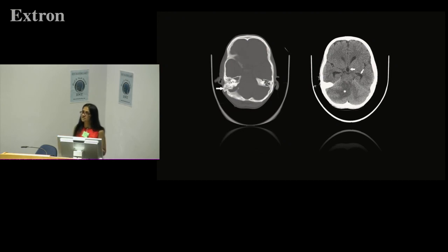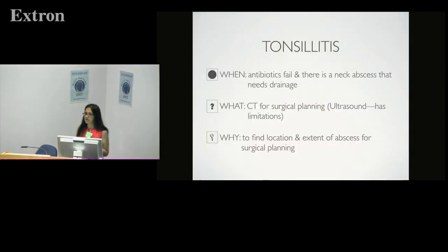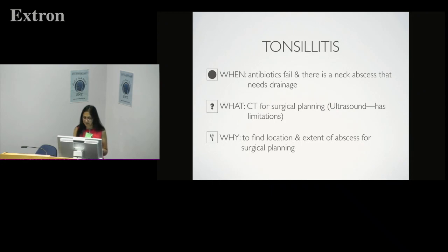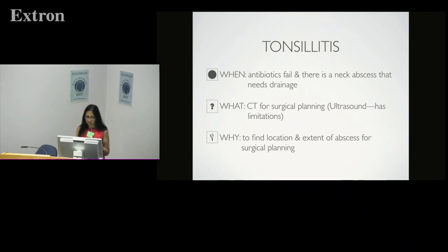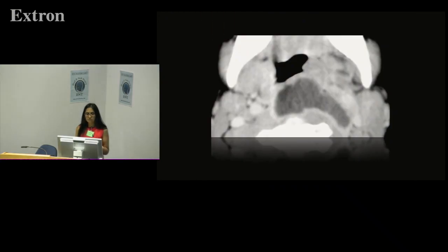Think about what is possible, what are the complications, and how do we image and manage them. Moving on to tonsillitis: when antibiotics have failed and you're considering that a neck abscess is developing which needs drainage, CT with contrast is required. You're looking for the location and extent of the neck abscess for surgical planning — you'll decide how to approach the neck based on what we find on CT. Here is a neck abscess developing in the pre-vertebral fascia, which will help direct your surgical approach.